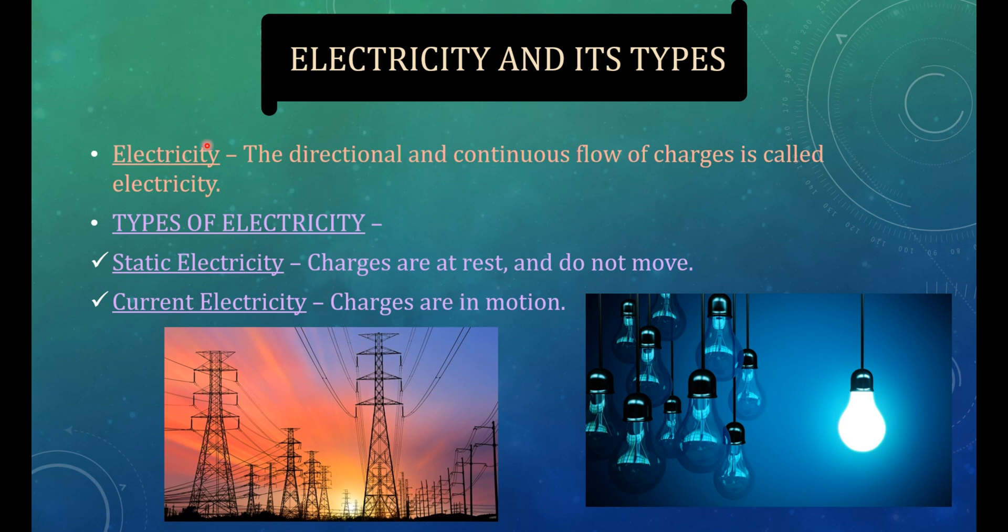Electricity and its types. Electricity, the directional and continuous flow of charges is called electricity. Types of electricity: static electricity and current electricity. Charges are at rest and do not move in case of static electricity. And current electricity charges are in motion.